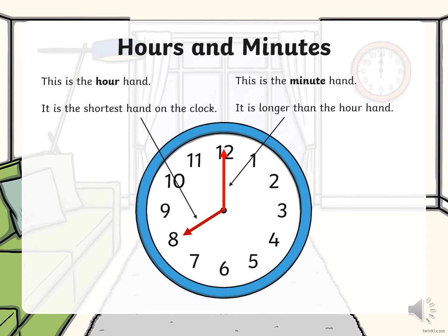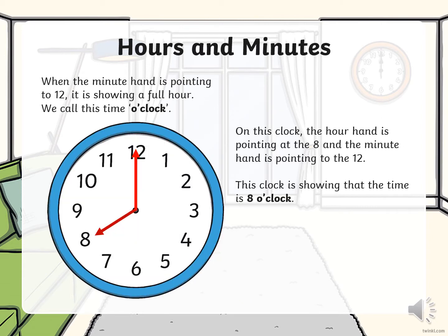Grade 2s, can you see that the long minute hand is pointing to the number 12 and it's touching it? And then if we look at the short hand — the hour hand — we can see that it's not touching the number, so it stops in front of the number. When the minute hand is pointing to 12, it is showing a full hour.